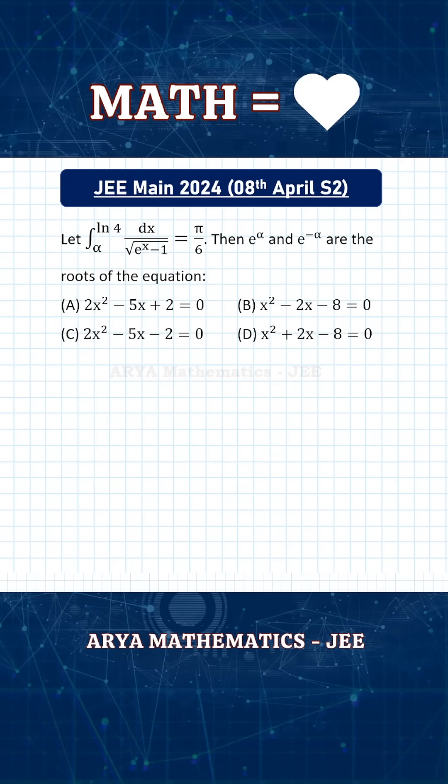One simple observation and you can solve this JEE Main problem in less than 10 seconds. This integral is given to us, the value of this integral is π/6, and the lower limit is α, upper limit is ln 4. Then we need a quadratic equation whose roots are e^α and e^(-α).